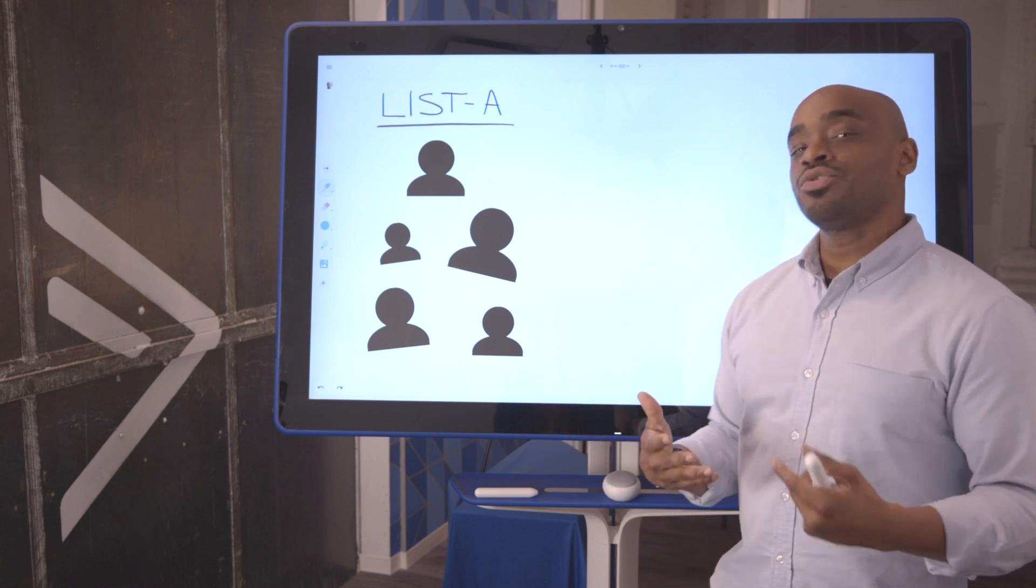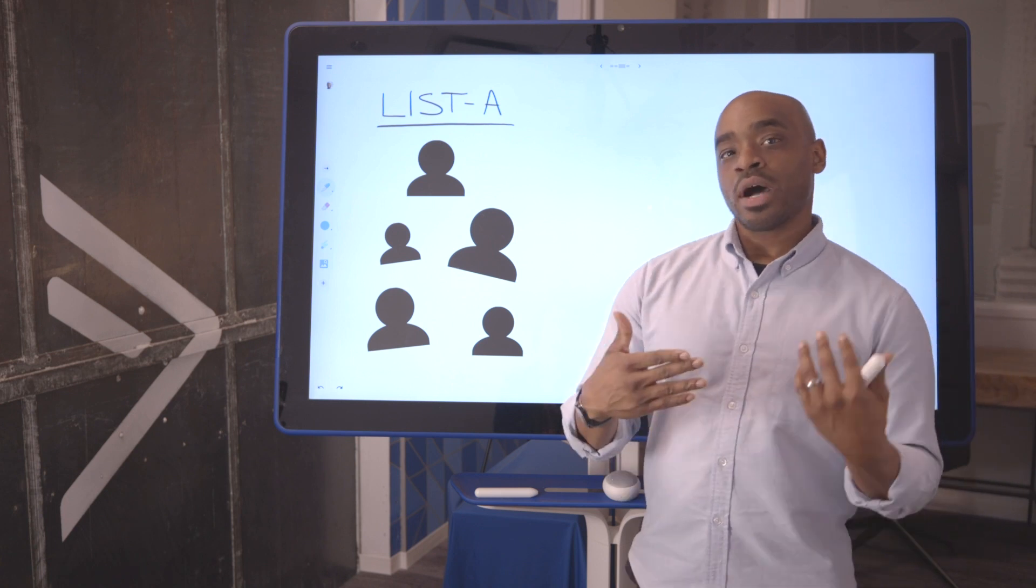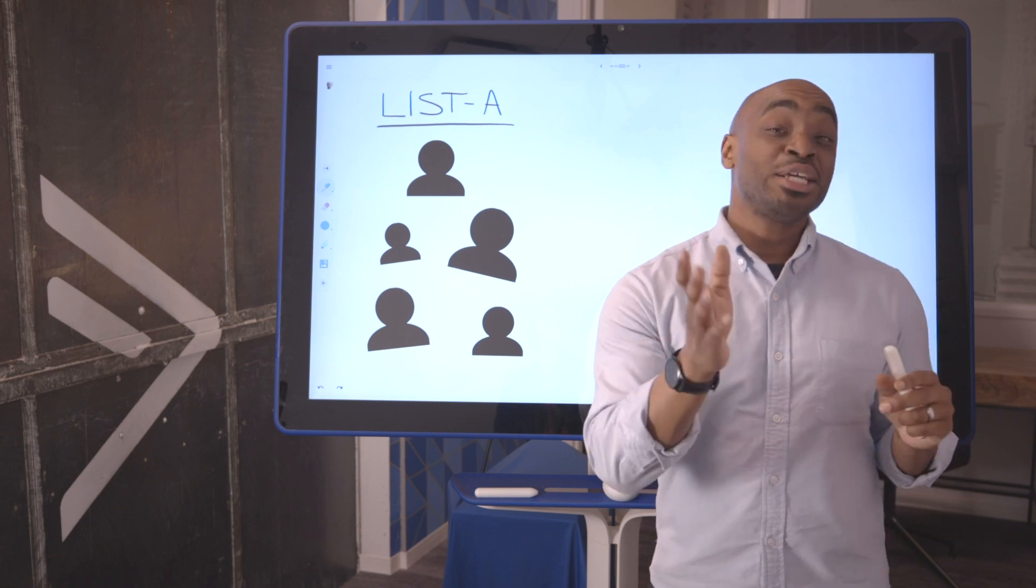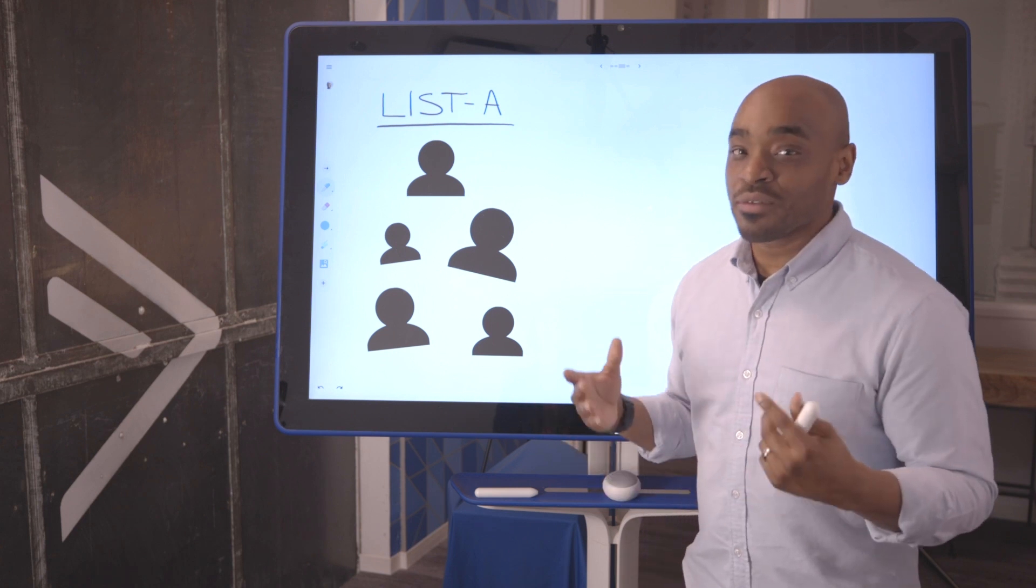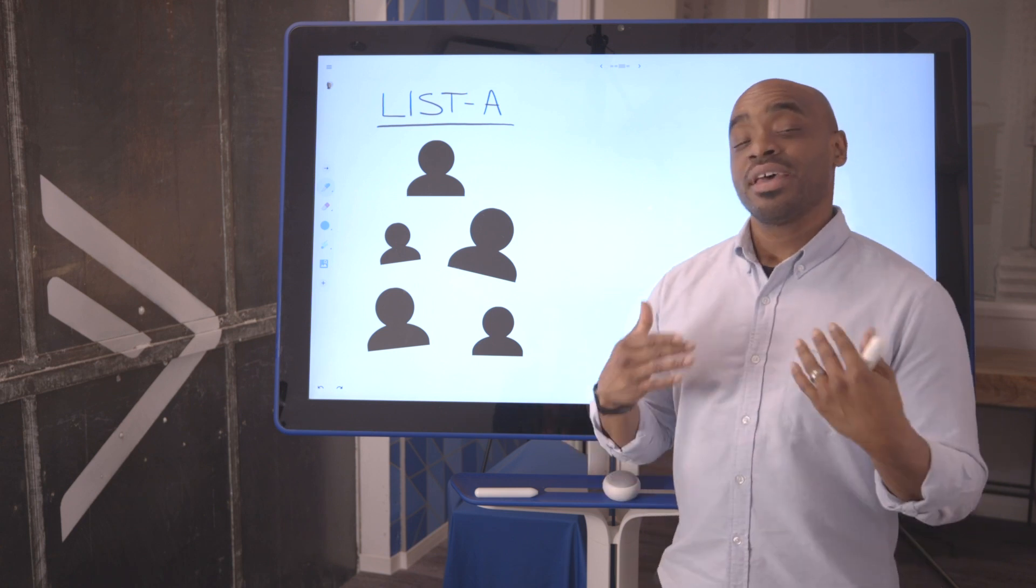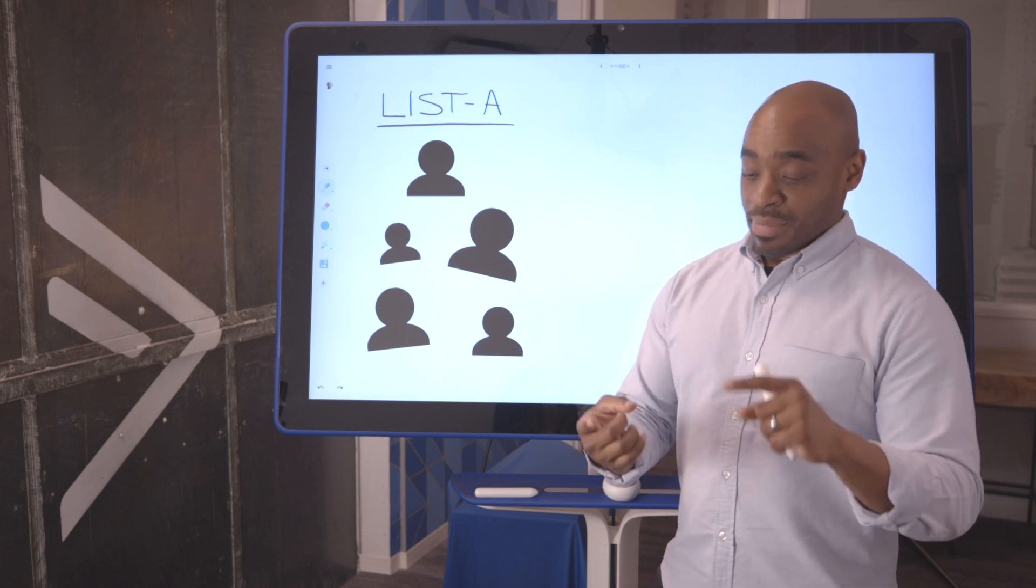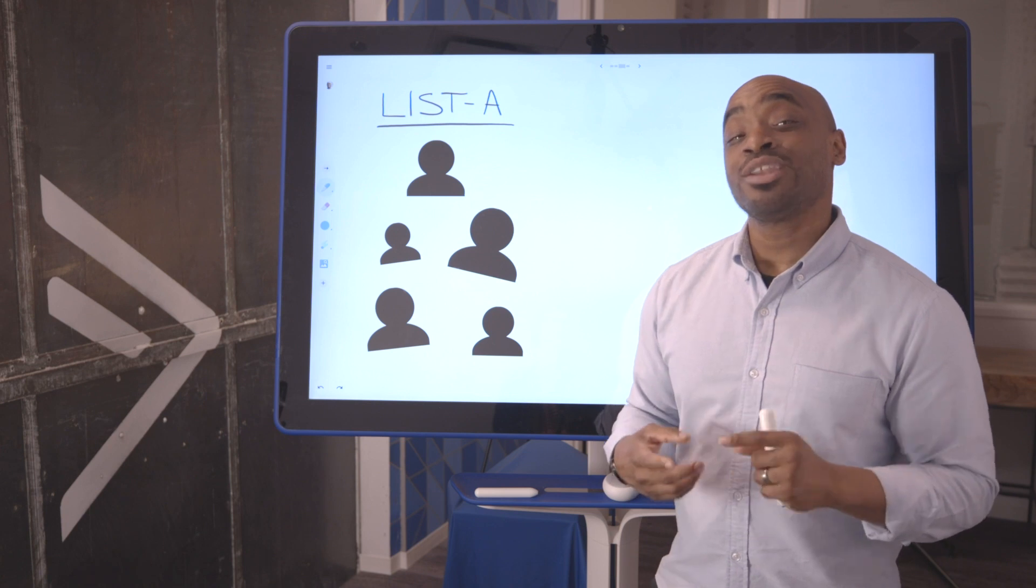And the way that you do that is through grouping. Now, up to this point, we've talked about contact grouping. I'd like to equip you with the official term. The official term is segmentation. That's the process of grouping your contacts by similar attributes and or actions.